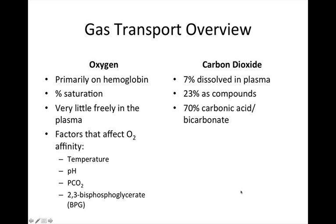To summarize oxygen transport: oxygen is primarily bound to hemoglobin, blood is about 98% saturated, and a very small amount is freely dissolved in plasma. There are various factors that affect hemoglobin's affinity for oxygen — including temperature, pH, partial pressure of carbon dioxide, and 2,3-BPG. Remember that oxygen is very loosely attached to hemoglobin, making it easier to unload, though adverse conditions can also impair unloading.